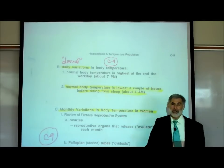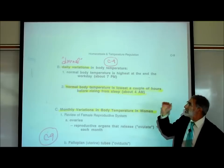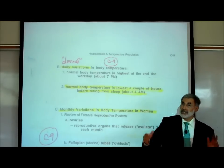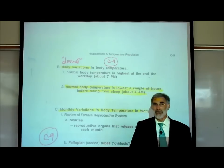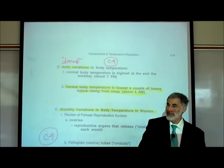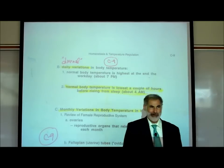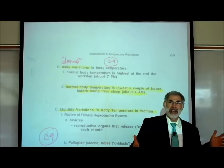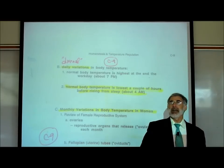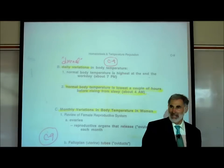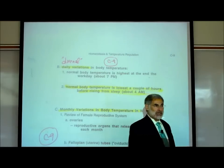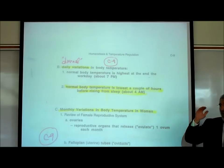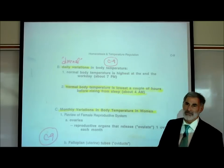Our normal body temperature is usually highest at the end of our work day. Most of us begin our work day in the morning and finish at about 5, 6, or 7 in the evening. So our body temperature is highest at about 6 or 7 in the evening.